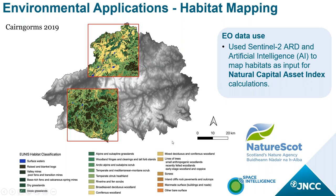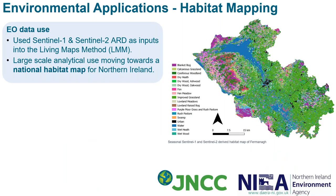I'll now hand back to Guaar to give an overview of applications the ARD can be used for. I'm going to give you a flavour of work that's either currently ongoing or what the data can be used for, using examples from a range of stakeholders and partners — look out for the logos on each slide because they're the ones carrying out this work. The first and most common use of ARD data is habitat or land cover mapping. Knowing where things are in the landscape is a primary data input for many spatial analyses, and earth observation provides an opportunity to not only create baseline maps but create maps that can be updated regularly. The example shown here is work by Space Intelligence and NatureScot, using optical data and artificial intelligence to map the Cairngorms as input for natural capital asset index calculations.